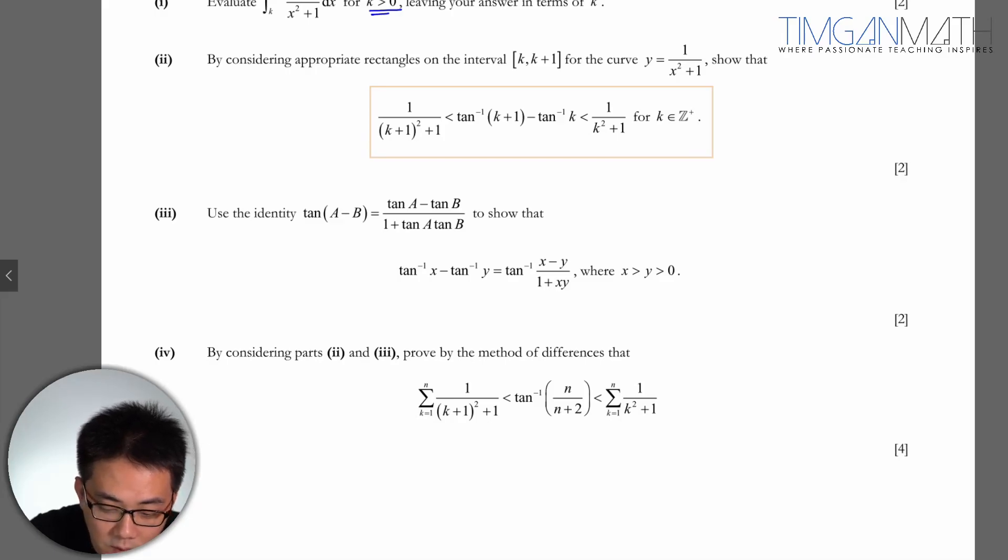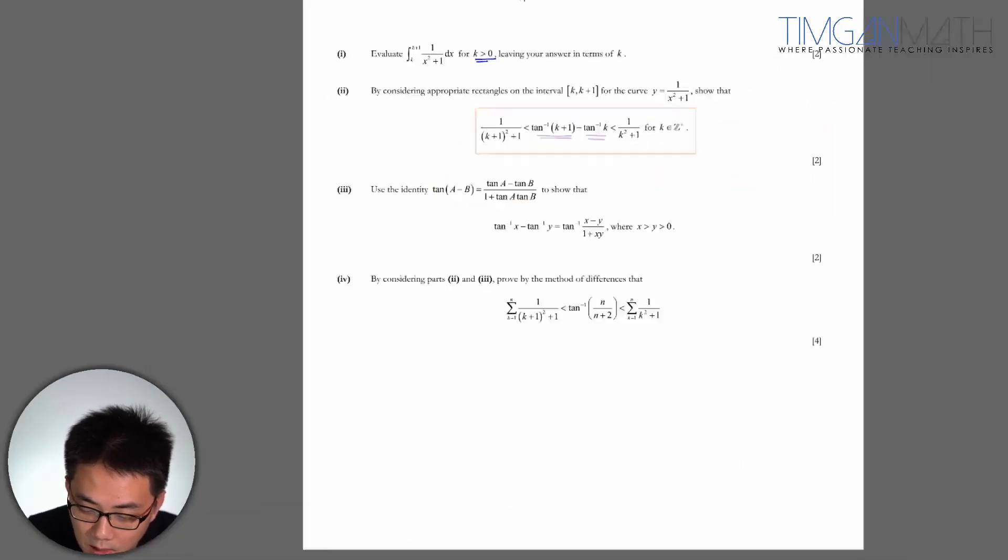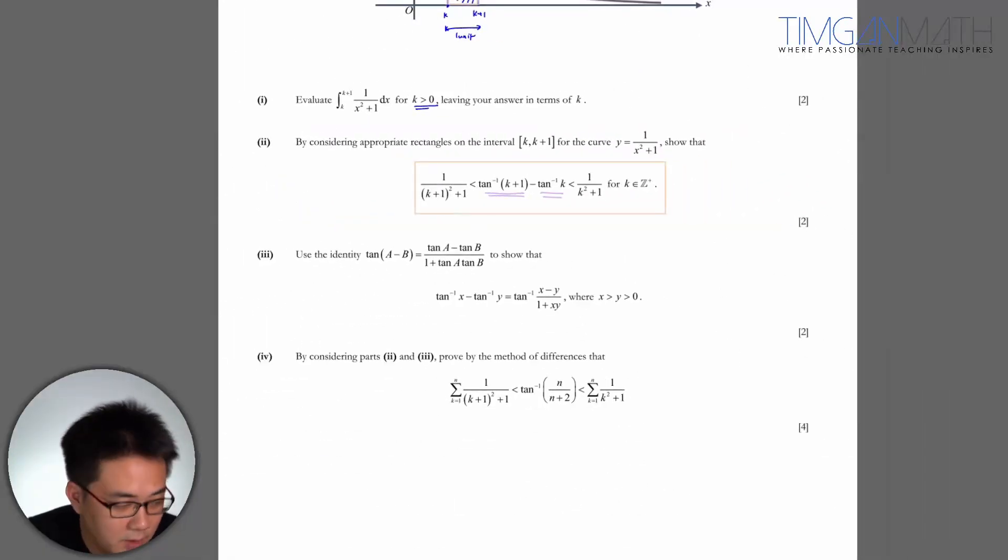Now, first thing you need to take note is actually these two are two neighboring terms. So this is k and k plus one and there are difference between two terms here. So k plus one minus k, tangent inverse k plus one minus tangent k. So you could actually perform a method of differences using this expression here. So let's just use this first and we'll see how things go.